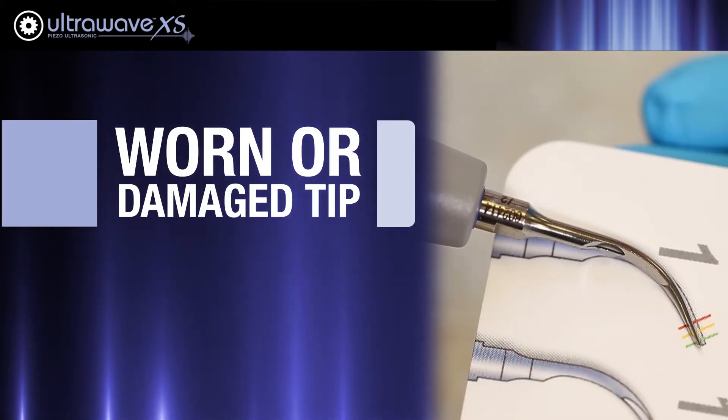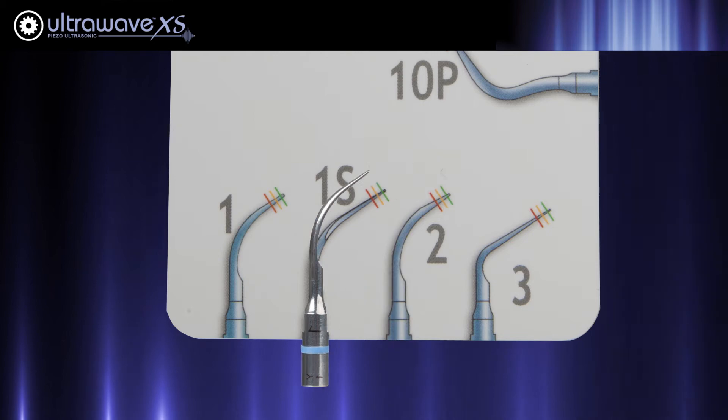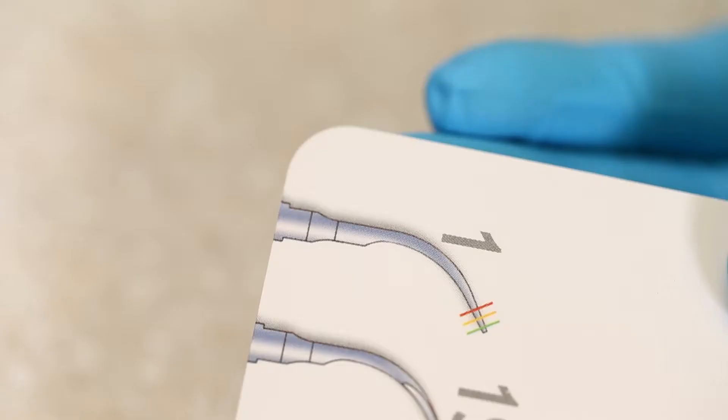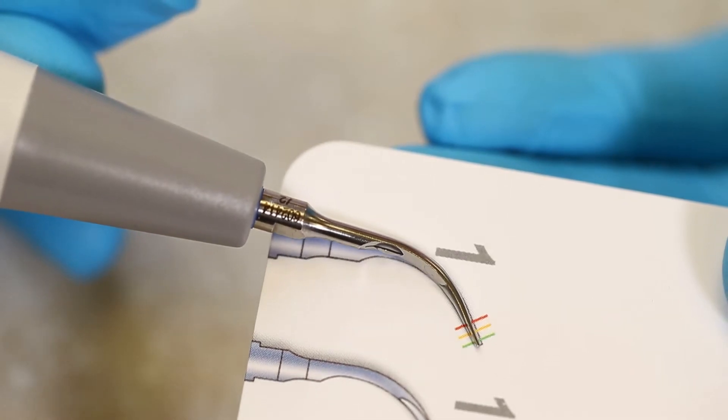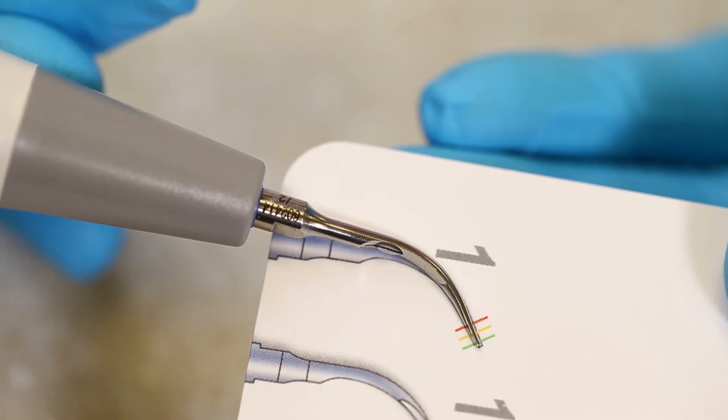You can check this by comparing the tip that you are using to the tip card included with your unit. On the tip card there are three lines. Each line shows how worn down your tip is. If you find that your tip is worn down below the yellow or red line, it should be replaced with another Ultradent Satellac tip.